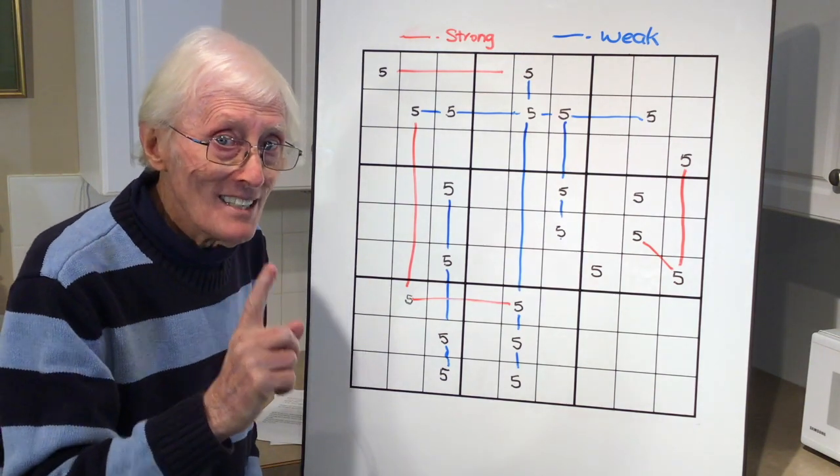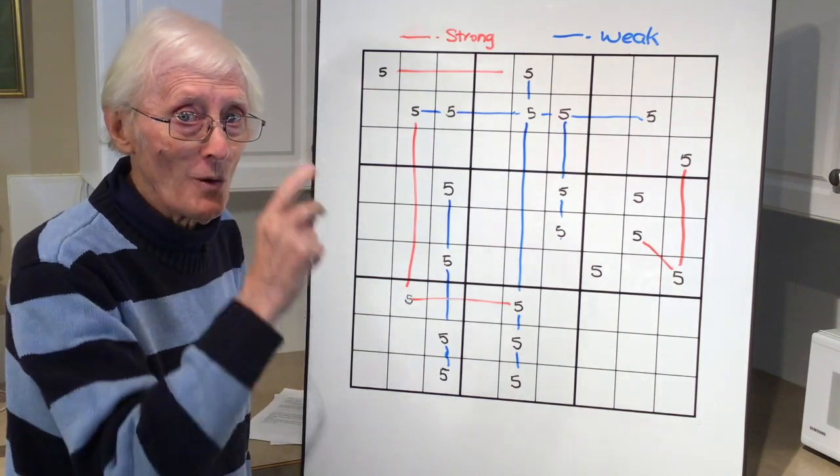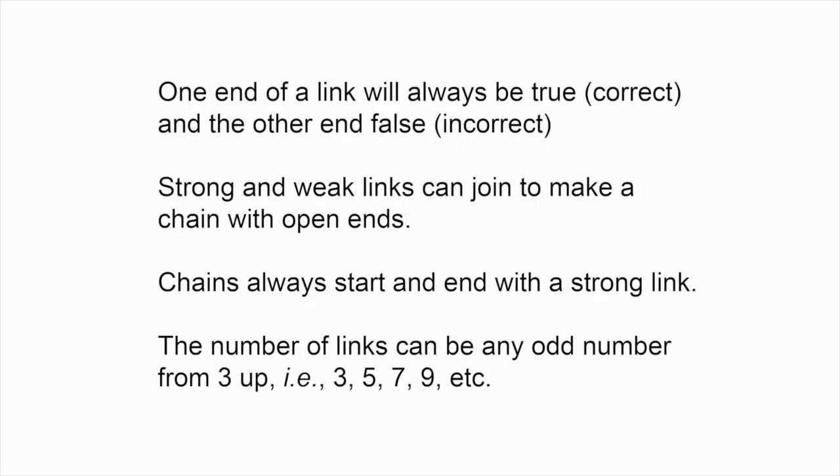Don't go away. The next part is coming right up. One end of the link will always be true. That is correct. And the other end false, incorrect. Strong and weak links can join to make a chain with open ends. The number of links can be an odd number from three up. That is, could be three links, five links, seven links, and nine links.